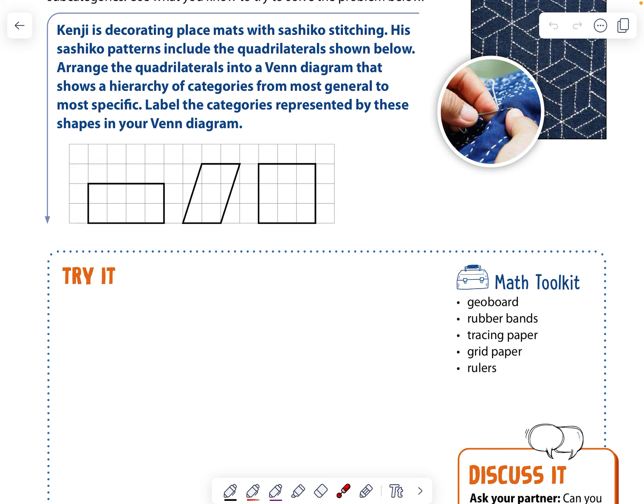Arrange the quadrilaterals into a Venn diagram that shows the hierarchy of categories from most general to most specific. Label the categories represented by these shapes in your Venn diagram.